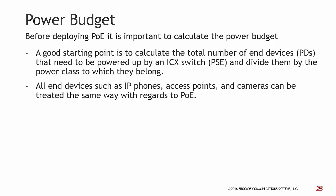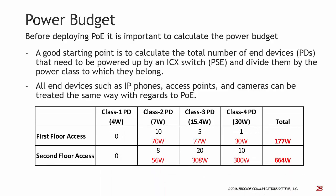Before deploying PoE, it is important to calculate the power budget, which is the power a switch can assign to all connected powered devices in parallel. A good starting point is to calculate the total number of PDs that need to be powered by an ICX switch and divide them by the power class to which they belong. All network devices such as IP phones, access points, and cameras can be treated the same way with regards to PoE. Here is an example for two floors where different devices consume different amounts of watts, and for each floor you calculate the total power needed to operate — that is the power budget the switches have to provide.